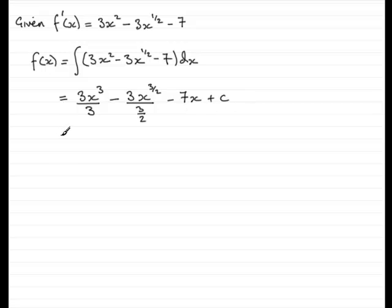Now, let's tidy up each of these terms. So, for the first term, the 3s cancel out. We get 3 into 3 goes once, so we've just got x cubed. Now, when we have this term, we've got 1 and a half into 3 goes twice, so we can write that then as minus 2x to the power 3 over 2, and then we've got the minus 7x plus that constant c.